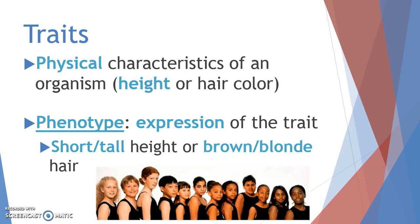Because everyone expresses traits differently, a person's trait expression is known as a phenotype. If we were to line these girls up from tallest to shortest, those would be different phenotypes. Similarly, looking at hair from light to dark — blondes, reds, browns, dark browns, or black — those are all expressions of a trait, or phenotypes. Make sure you highlight or underline that word because it is very important.